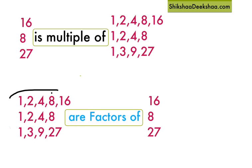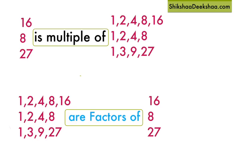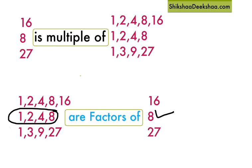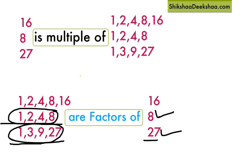Only specific numbers can be multiplied together to get 16 — that is, only these numbers can give us 16. So we say that a number has a limited number of factors. Similarly, only these numbers can give us 27, so 27 has exactly 4 factors. A number has a limited number of factors.